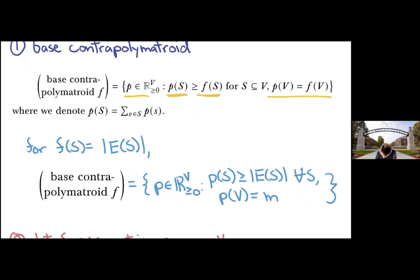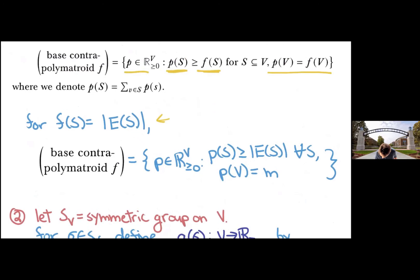And for our particular example of the number of edges induced by a set of vertices, that's trying to assign vertex weights so that the weight of any set is at least the number of edges in that subgraph, and the total weight is M.